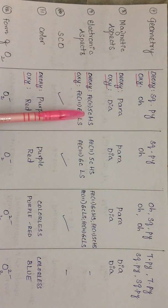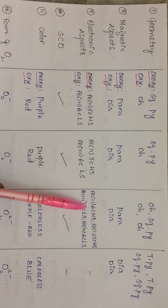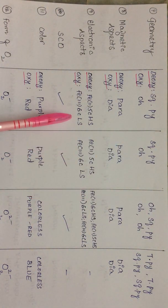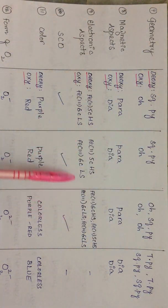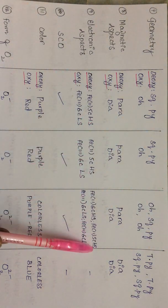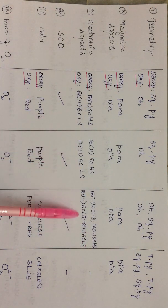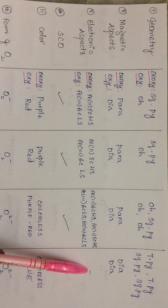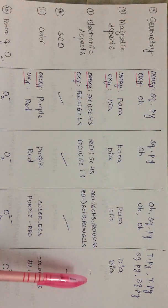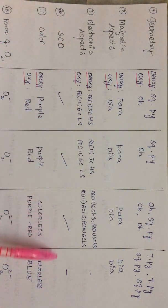Regarding electronic aspects: in hemoglobin and myoglobin, iron goes from +2 to +3 upon oxygenation, and the same is true for hemerythrin. In all three cases — hemoglobin, myoglobin, and hemerythrin — there is a ligand-induced spin crossover from high spin to low spin state. In hemocyanin, there is no such spin crossover because copper goes from d¹⁰ to d⁹ and does not involve a spin crossover.